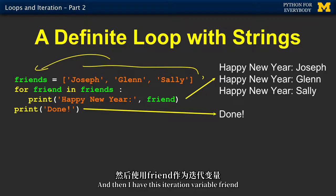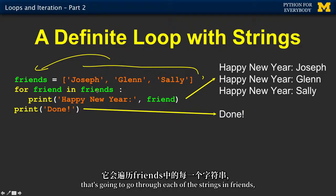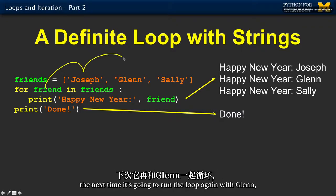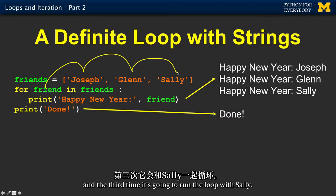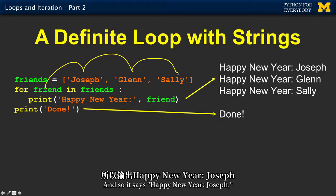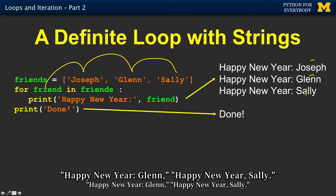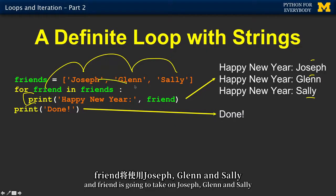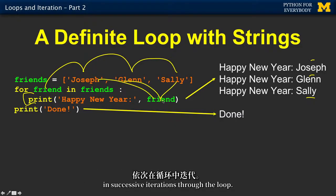And then I have this iteration variable friend that's going to go through each of the strings in friends. So that means that friend is going to go once Joseph, the next time it's going to run the loop again with Glenn, and the third time it's going to run the loop with Sally. And so it says happy new year Joseph, happy new year Glenn, happy new year Sally. So you know that this code is going to run three times, and friend is going to take on Joseph, Glenn, and Sally in successive iterations through the loop.